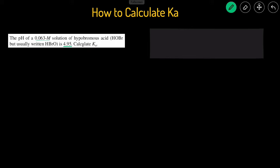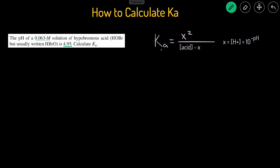So this problem asks us to calculate the Ka, and it gives us the pH of the acid as well as the concentration of the acid. So we have the concentration, we have the pH of the acid, and we have to solve for the Ka or the acid dissociation constant.